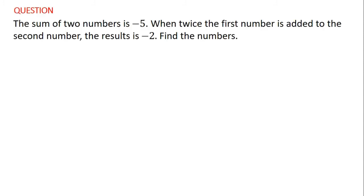The question is: the sum of two numbers is negative 5. When twice the first number is added to the second number, the result is negative 2. Find the two numbers.